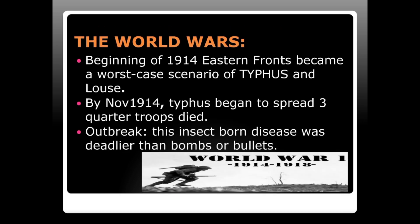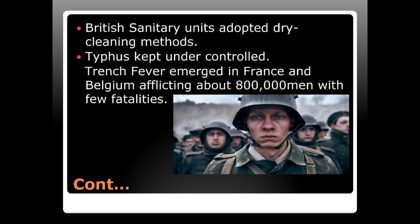During World War I beginning in 1914, the Eastern Front became a worst-case scenario for typhus. By November 1914, typhus began to spread and three-quarters of troops died in the outbreak — this insect-borne disease was deadlier than bombs or bullets. British sanitary units adopted cleanliness methods to control typhus, but trench fever emerged in France and Belgium, afflicting about 800,000 men with few fatalities.